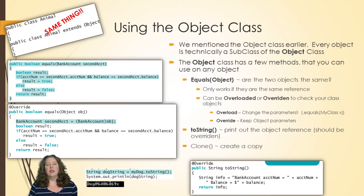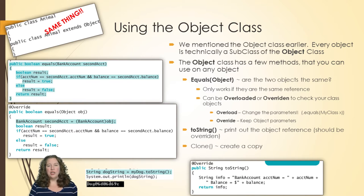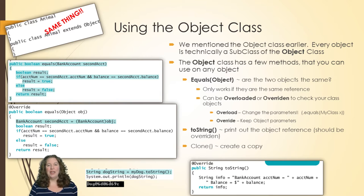The overloading for equals only works if they are the same reference type — a dog and a cow won't work, but a dog and a dog will. With toString, anything that tries to print your object is going to use that method. You can overload toString so that you can just say System.out.println(salesperson) and it'll go find your toString method and run it directly — the same way you can with an integer, float, or string. That way you don't have to call a separate display method.